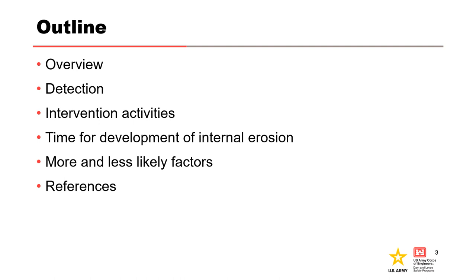For evaluation of this node of the event tree, unsuccessful detection or intervention leads to breach. A qualitative method of assessing the time for development of internal erosion will also be discussed, which influences the likelihood of successful detection, intervention, or repair. First, an overview of this node of the event tree.